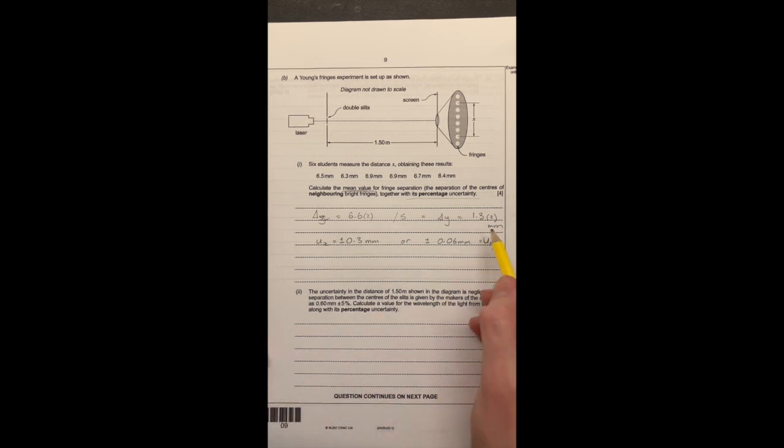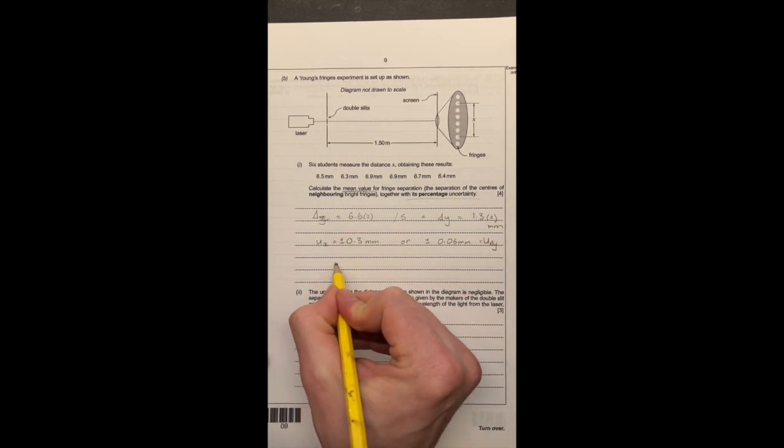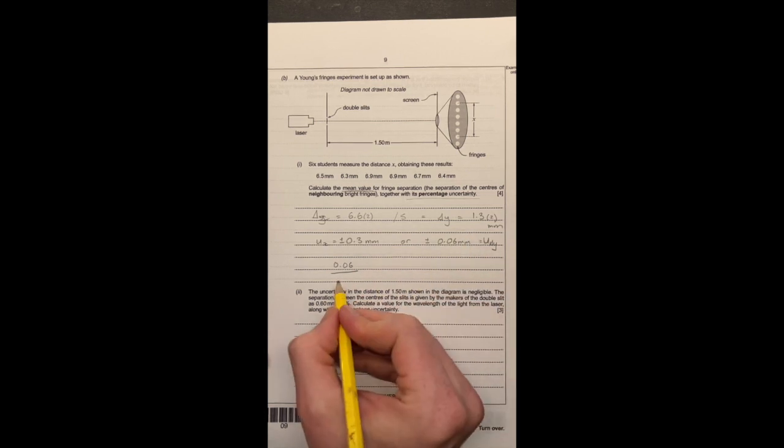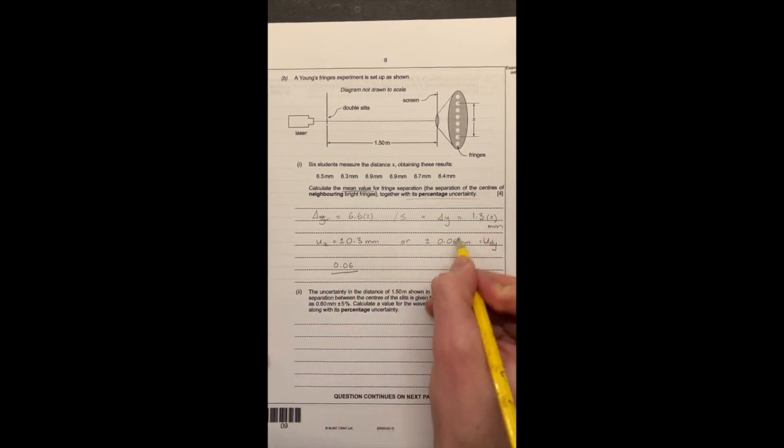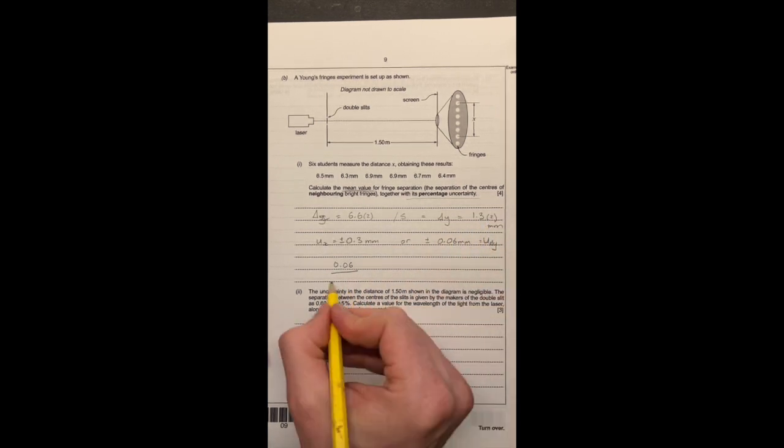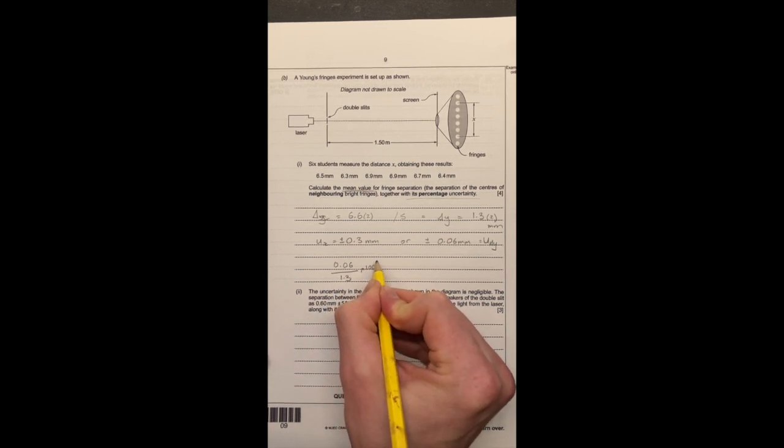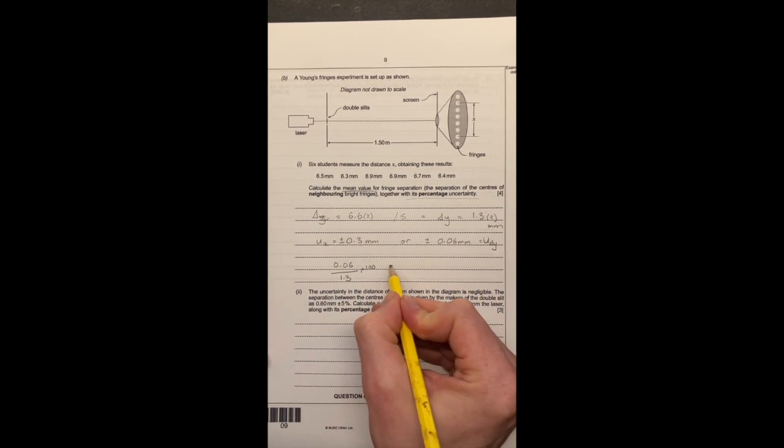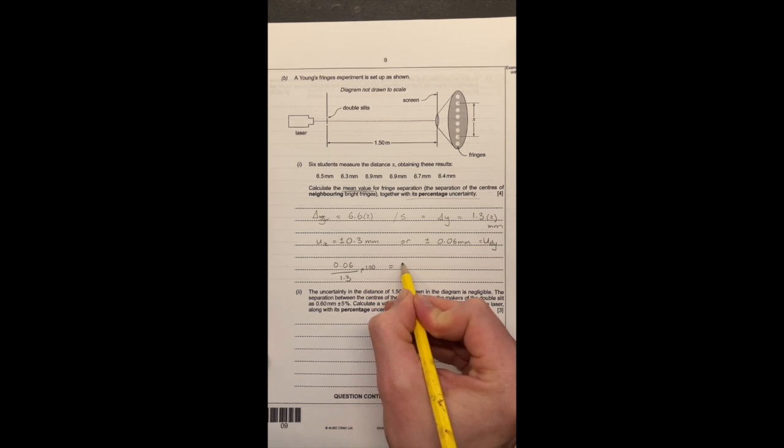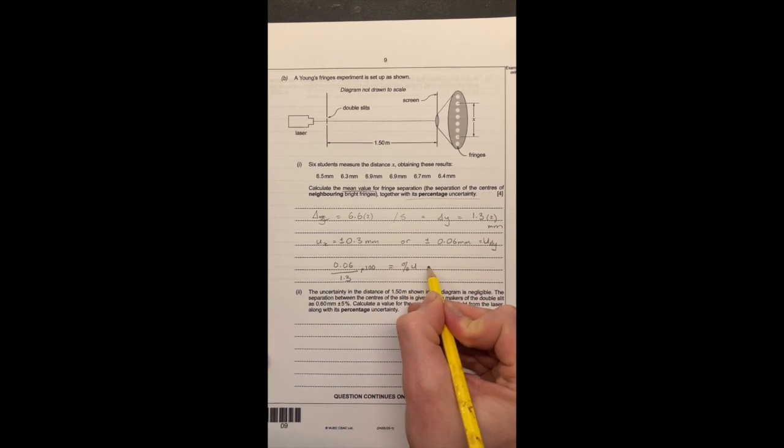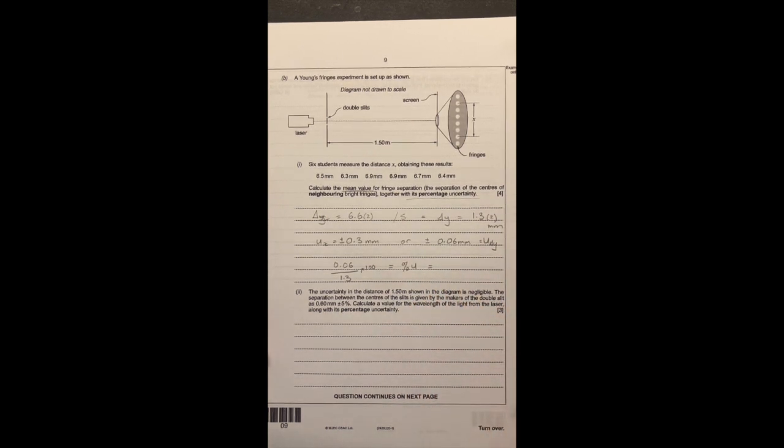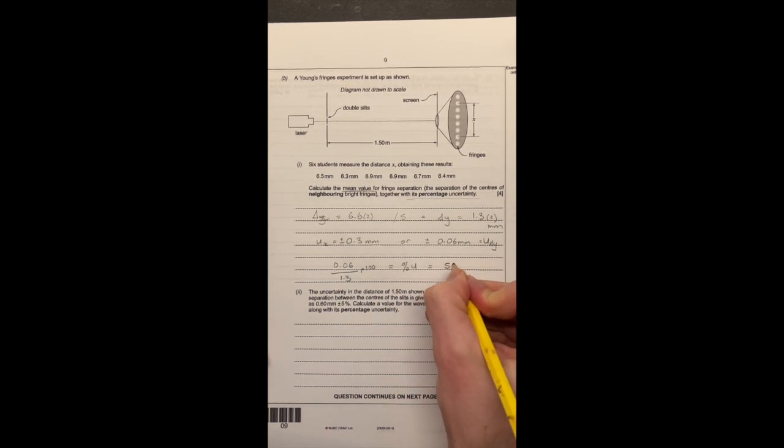Okay, so if we then take these two values, so we take this 0.06, divide it by this, so my uncertainty, and divide it by my average reading, which is 1.3, times by 100, because we're looking for a percentage, we get the percentage uncertainty to be equal to 5%.